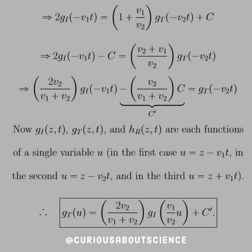Now g_I, g_T, and h_R are each functions of a single variable u. So in the first case, u equals z minus v_1 t. In the second, u equals z minus v_2 t. And in the third, u equals z plus v_1 t. So if we want to solve this thing for g_T using some dummy variable u, we now have that where we have 2 v_2 over v_1 plus v_2 times g_I with the ratio v_1 over v_2 u plus C prime.